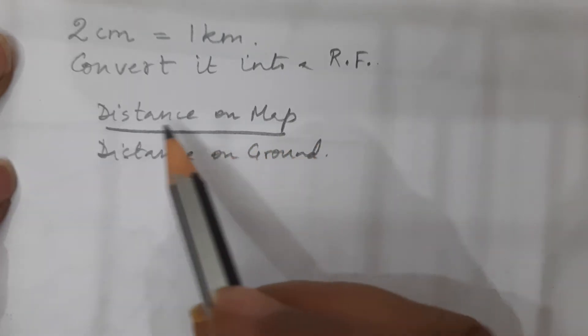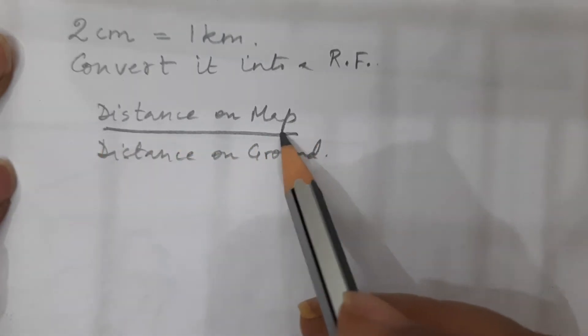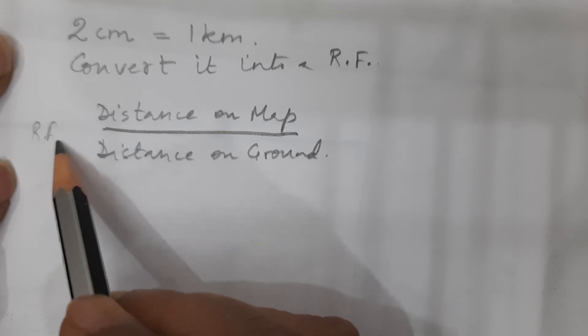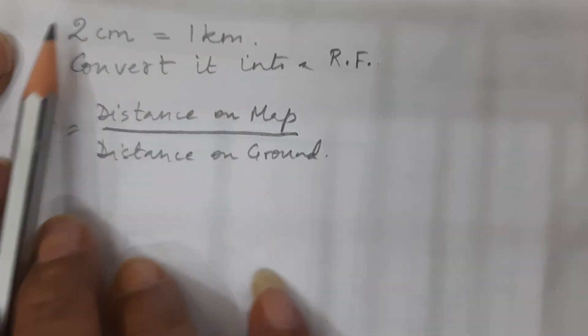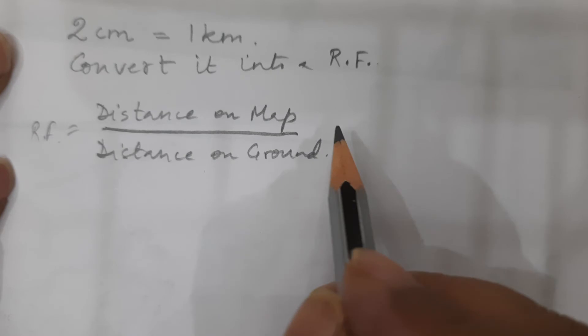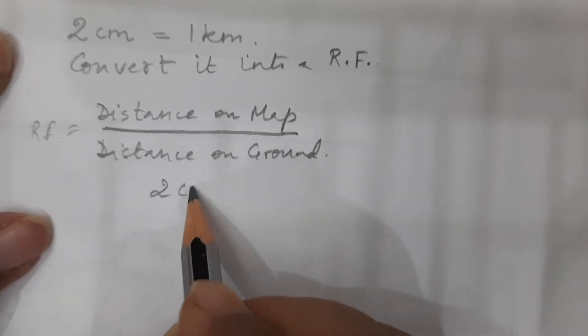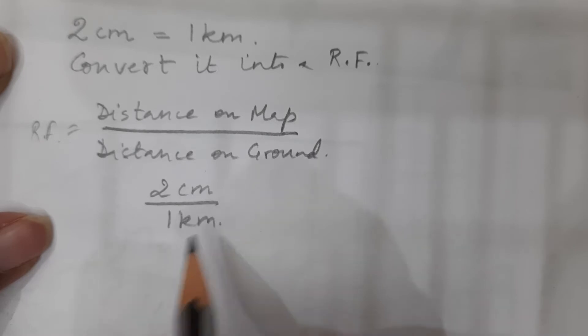So when we see this formula, which is the formula for RF, which is RF is equals to, so I am going to fit in this statement into this. That means I am going to write 2 centimeter on the map upon 1 kilometer on the ground.